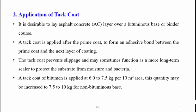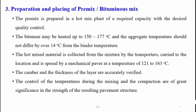The third step is preparation and placing of premix or bituminous mix. The premix is prepared in hot mix plants of required capacity with the desired quality control. The bitumen is heated to 150 to 177 degrees Celsius, then aggregates are added. It is ensured that the temperature of aggregates does not differ by more than 14 degrees Celsius from the binder temperature. The hot mixed material is then transported to the site and spread with mechanical pavers at a temperature of 121 to 163 degrees Celsius.